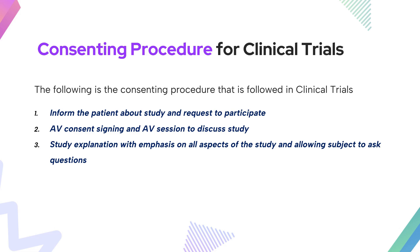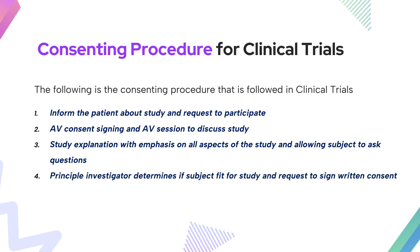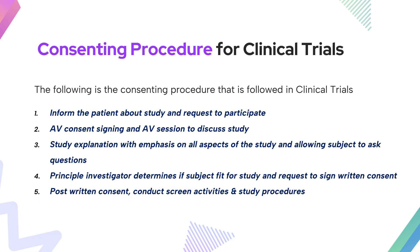Once the AV session starts, the principal investigator discusses the study in detail, with emphasis on all aspects of the clinical trial. The subject is also allowed to ask questions — about study visits, responsibilities, or medications. The principal investigator then reviews the medical history, determines if the subject is fit to participate, and requests them to sign the consent form. Once the written consent is obtained after the AV consent, screening activities begin and study procedures are started.